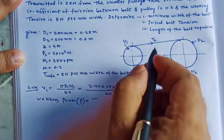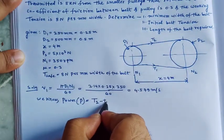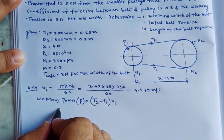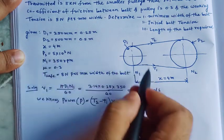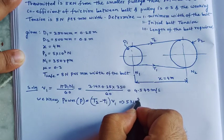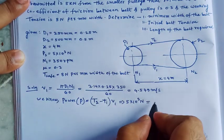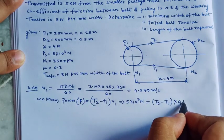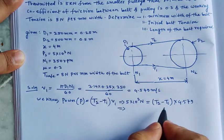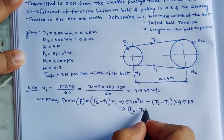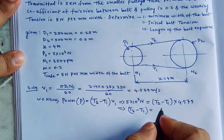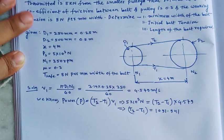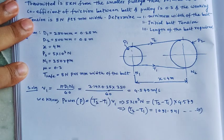We know that power equals (T2 minus T1) into v1. Power is already given for the smaller pulley as 5×10³ Newtons, and v1 is 4.579 m/s. So we can write T2 minus T1 equals 1091.9 Newton. This is Equation 1.